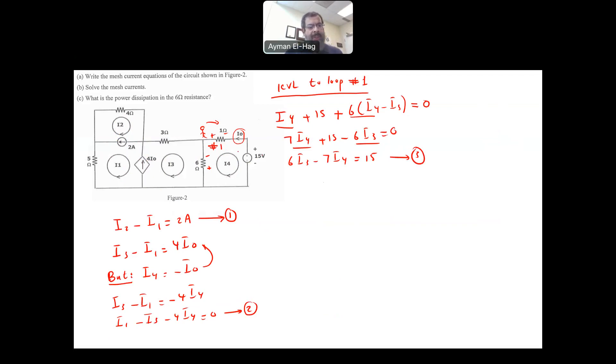We are done, we need one more equation. You can select one mesh or combination of meshes, but the point is that you should not have any current source. I can basically take this loop, which is a combination of several meshes. As you can see, there is no current source in the path of that. So let's start applying KVL here.